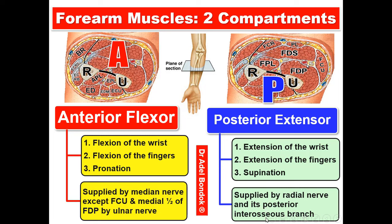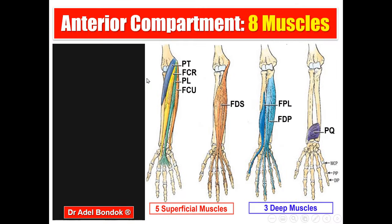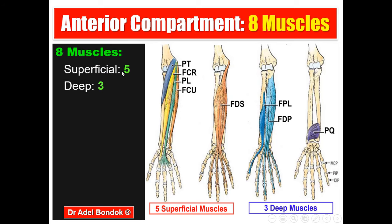Let us talk today about the anterior compartment, and in another video I will talk about the posterior compartment. The anterior compartment contains eight muscles. We can divide the eight muscles into a superficial group and a deep group, or into first, second, third, and fourth layers. We have five superficial muscles and three deep muscles.